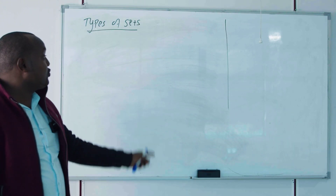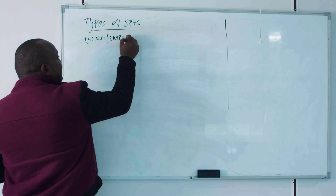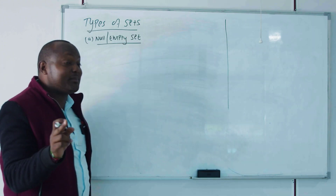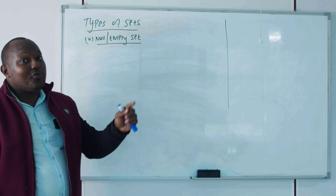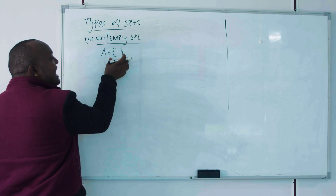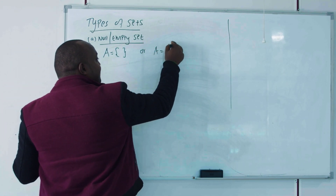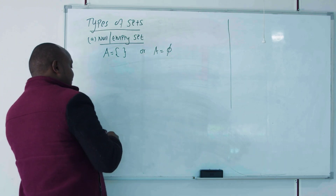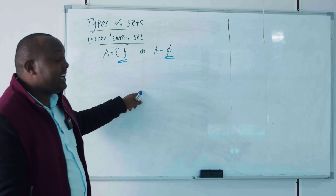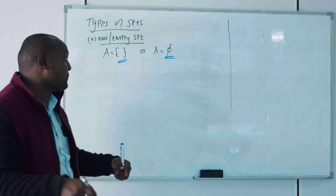Now let's look at types of sets. First is the empty set — a set that contains no elements. Even though it contains no elements, we still call it a set. Set A can be an empty set, represented using the empty set symbol ∅ or empty curly brackets {}. I want to emphasize that the empty set is itself a subset of any other set, and it is still a set by itself.